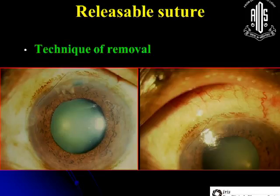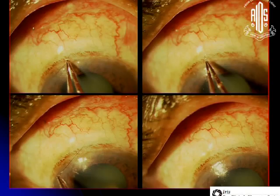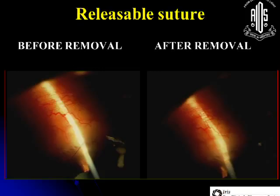This is a releasable suture shown on the slit lamp. The patient looks down and with a sterile forceps you gently pull it, and the bleb gets elevated immediately into a more diffuse appearance.